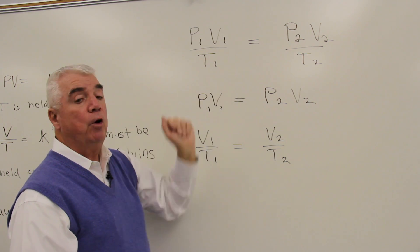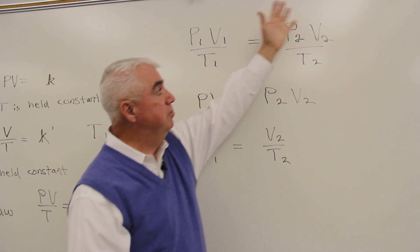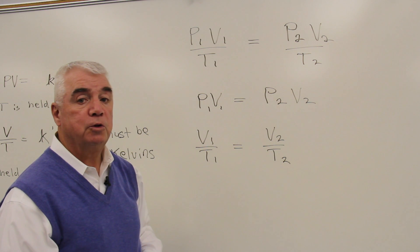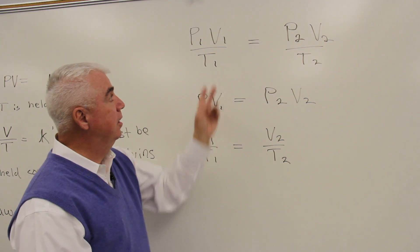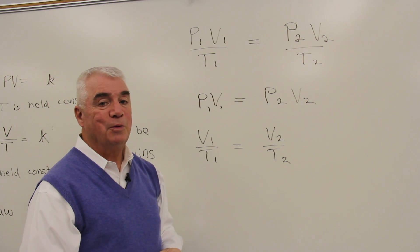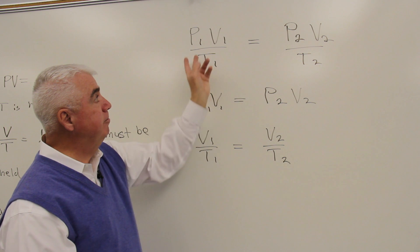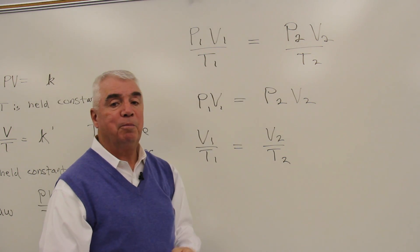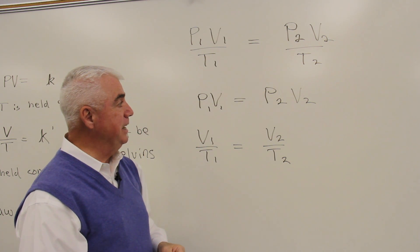Because PV over T is equal to a constant, well, this also must be equal to the same constant. Or in other words, they're equal to one another. P1 V1 over T1 is equal to P2 V2 over T2.